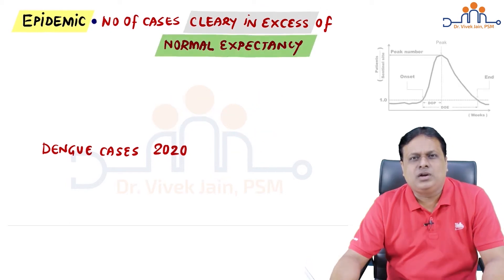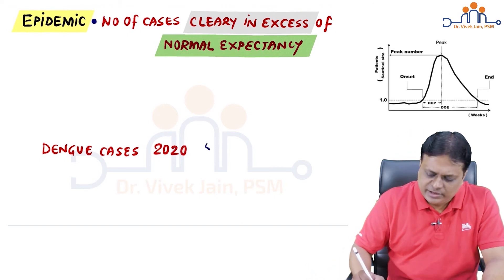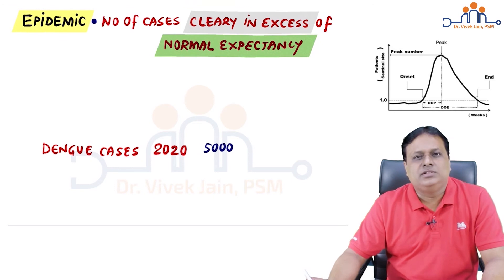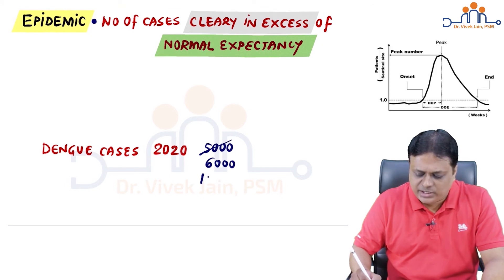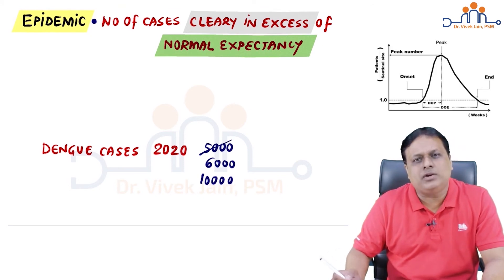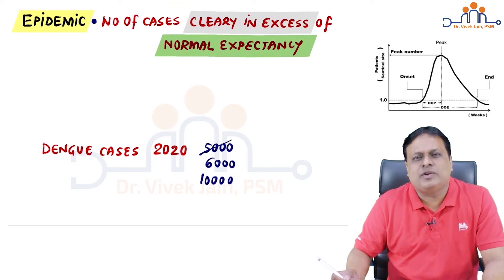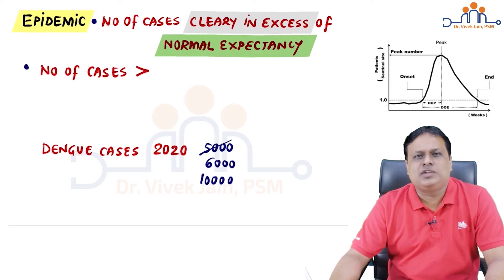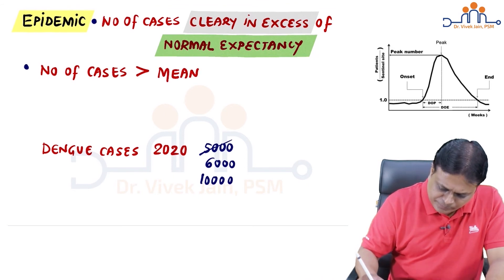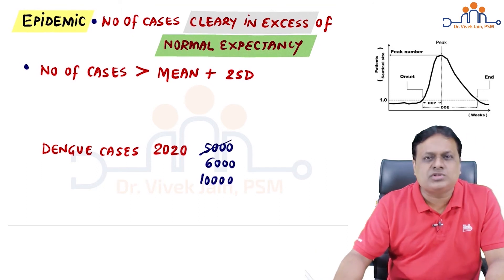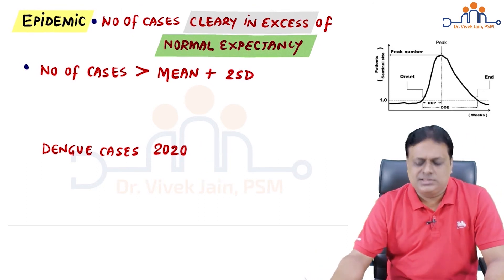How will health authorities know when a number qualifies as a clear excess? Should epidemic be declared if cases increase by 1000, or when they double, triple, or quadruple? This is calculated by a statistical formula. The second definition of epidemic is: the number of cases of a disease is more than the mean plus two standard deviations.